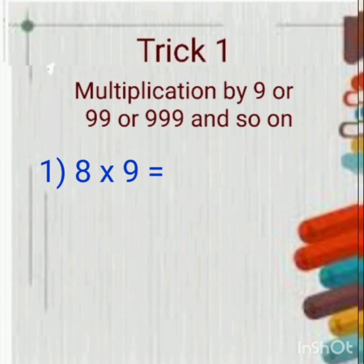First example is 8 multiplied by 9. We all know 8 times 9 is 72, but now let's find out the answer by using this shortcut trick. What are you going to do children?